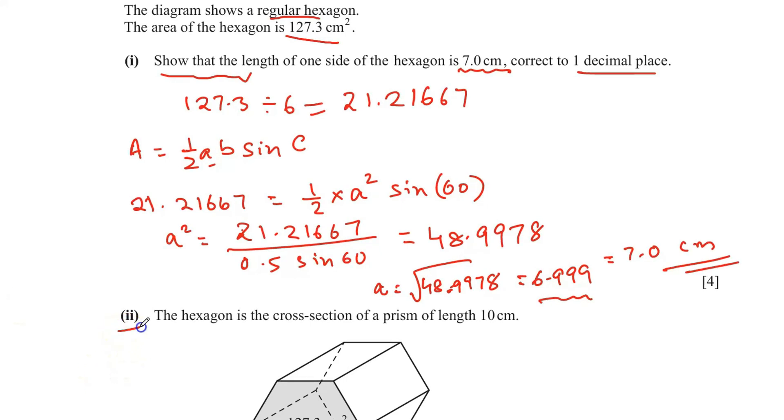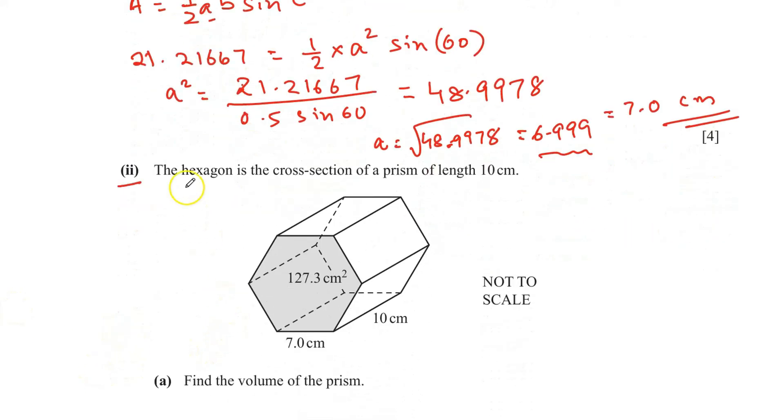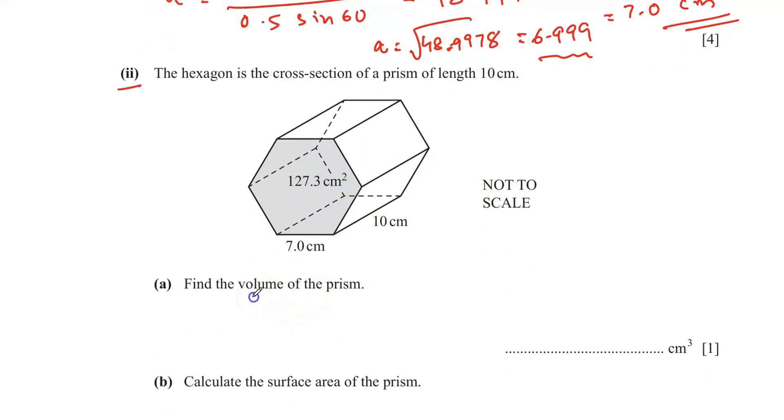So part two, the hexagon is the cross section of a prism of length 10 centimeters. Find the volume of the prism. Volume is area of the cross section times length. So we already have 127.3 and the length is 10. And that's going to be 1273.